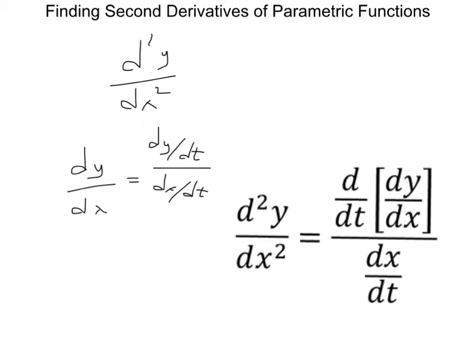The idea is, if I want the second derivative of y with respect to x, I can take dy dx, the rate of change of y with respect to x, and look at how that's going to change with respect to t, and then divide that by how x changes with respect to t. This dividing by dx dt allows me to change this with respect to t into a with respect to x.